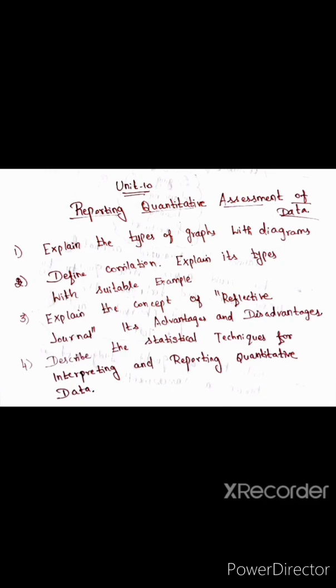Unit 10, we will put graphs. Types of graphs include histogram, frequency polygon, and cumulative frequency polygon. Diagrams include pie diagram and bar diagram. There are four types of graphs and two types of diagrams. All of these are the content that you will be able to write.